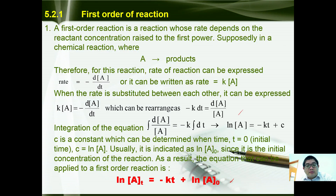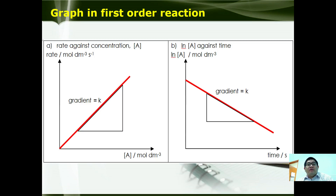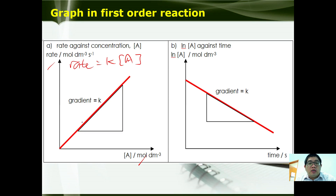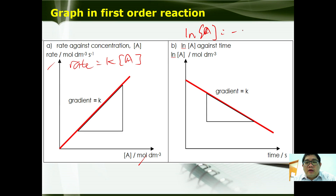A few graphs relate to the first order reaction. The first graph is derived from rate equals k[A]. If you plot rate against concentration, you get a positive gradient where the gradient k is the rate constant. You can also get a negative gradient graph using the expression ln[A] equals negative kt plus ln[A]₀, where the negative gradient equals the rate constant k.